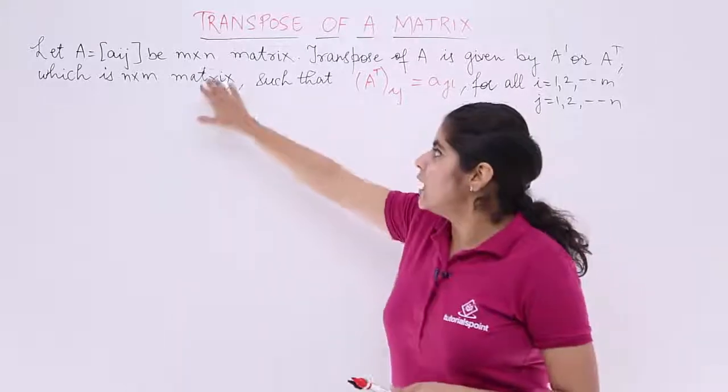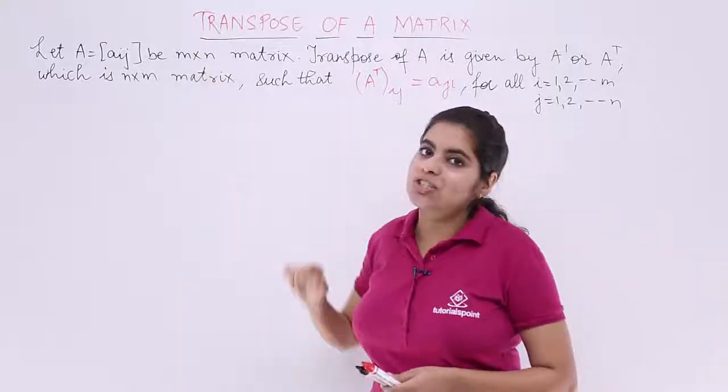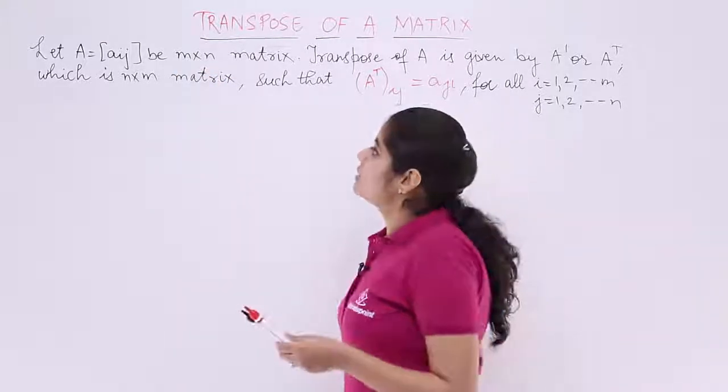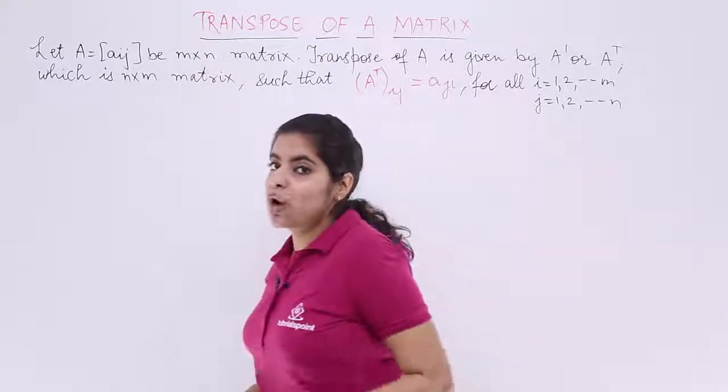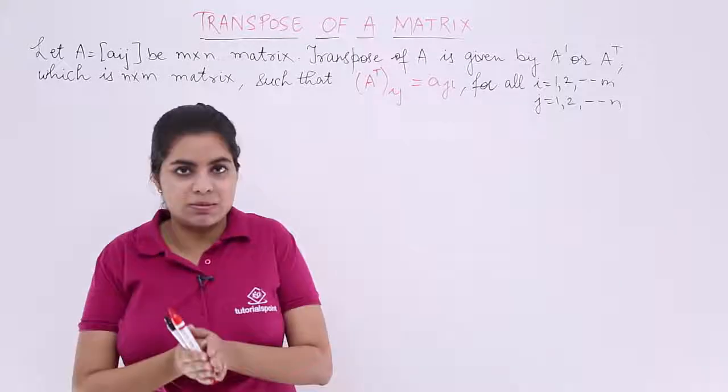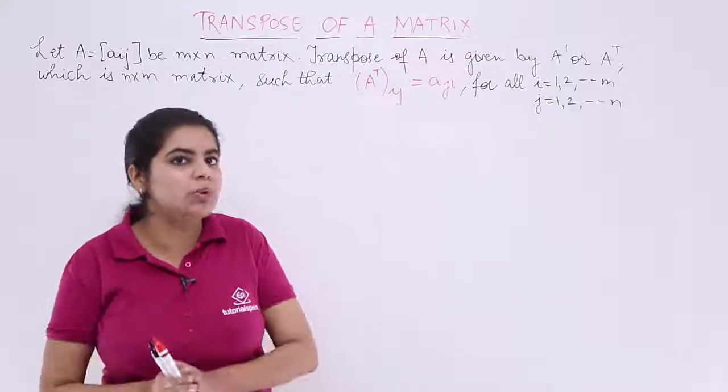Now what is transpose? Let A = Aij be an m by n matrix. That means we already have a matrix with m rows and n columns. Now if you want to find out the transpose of this matrix A, it will be denoted as what?